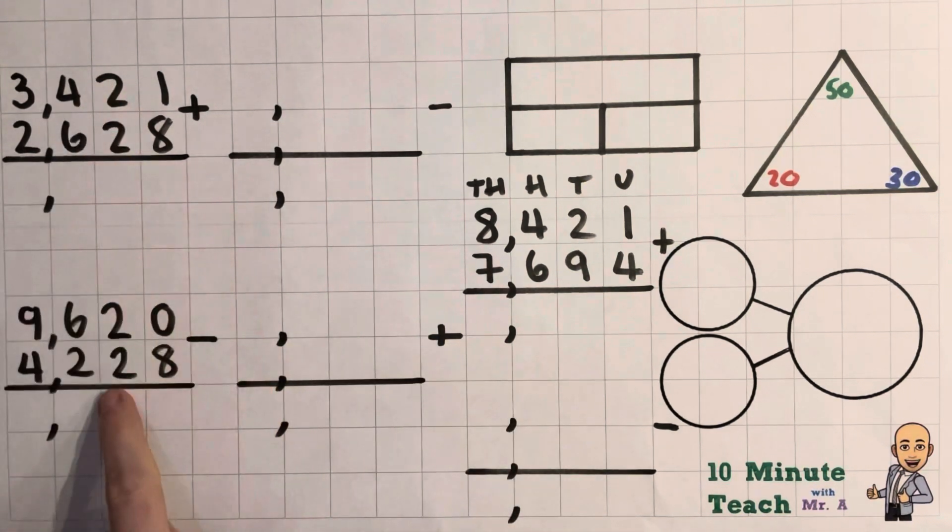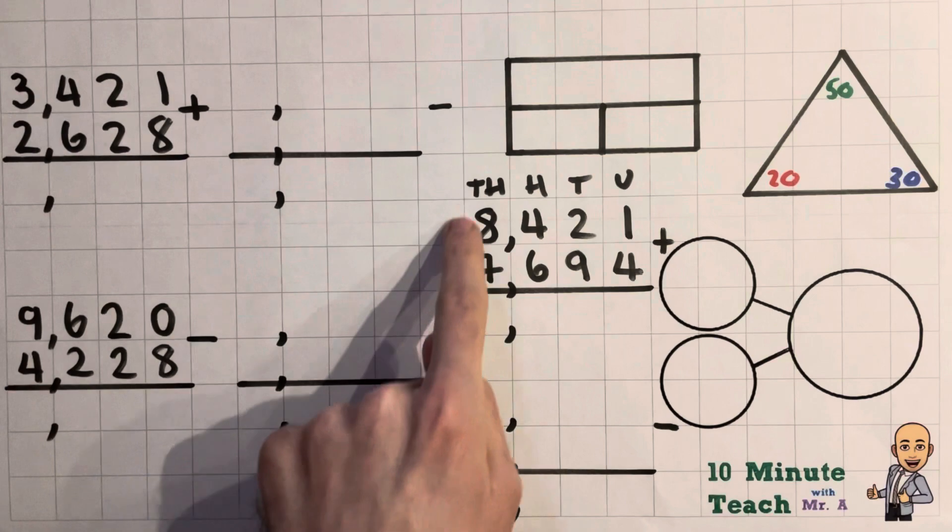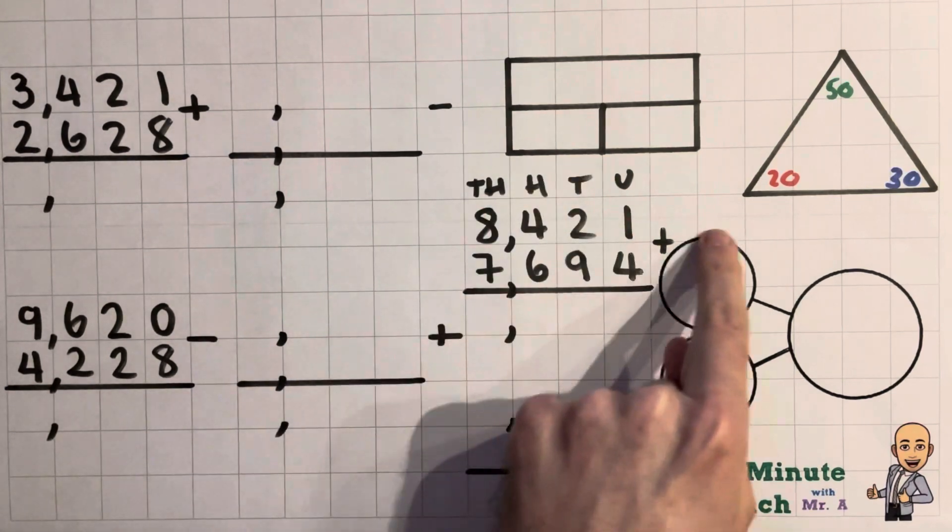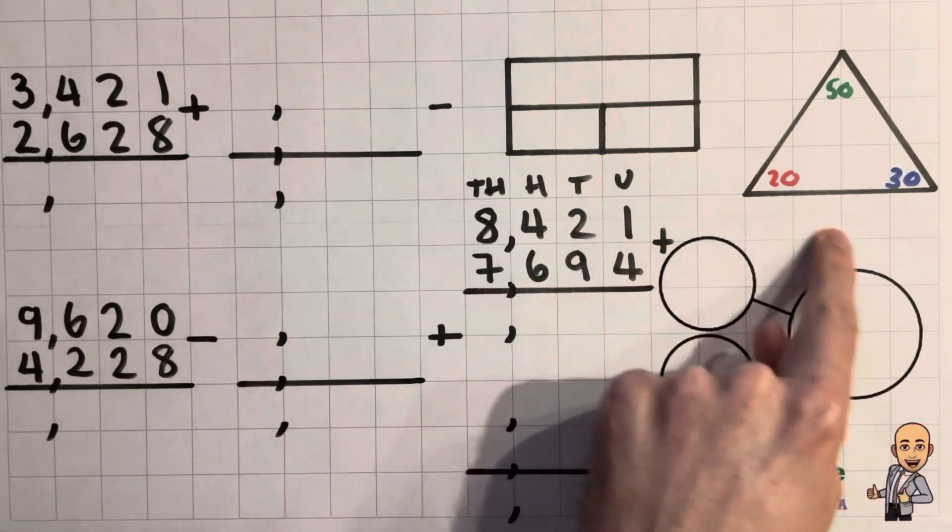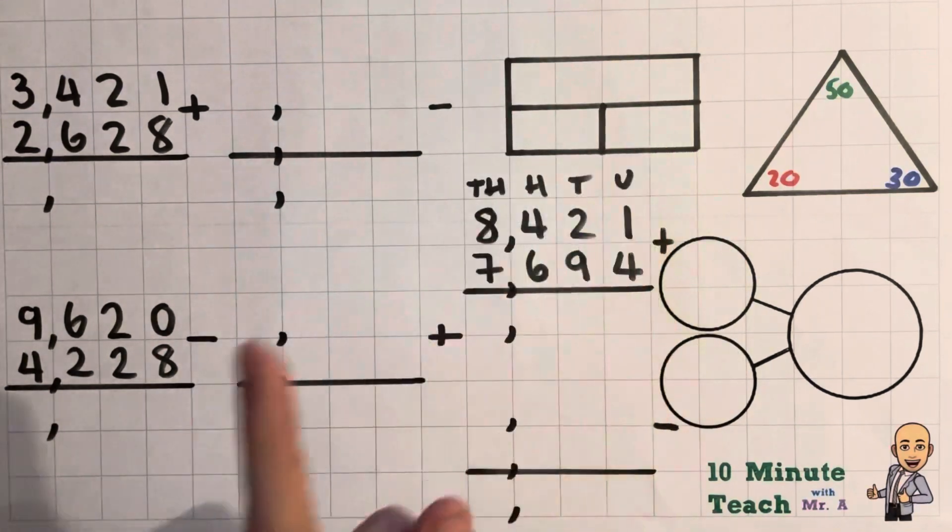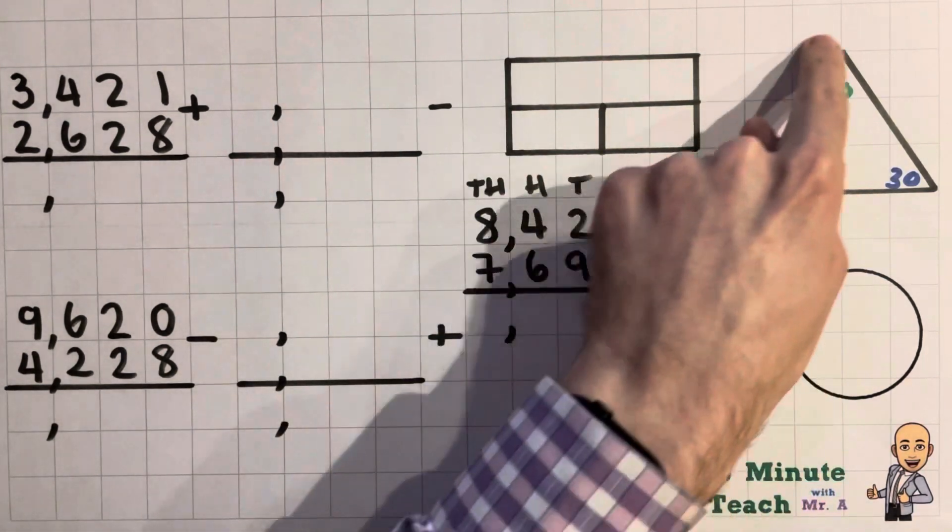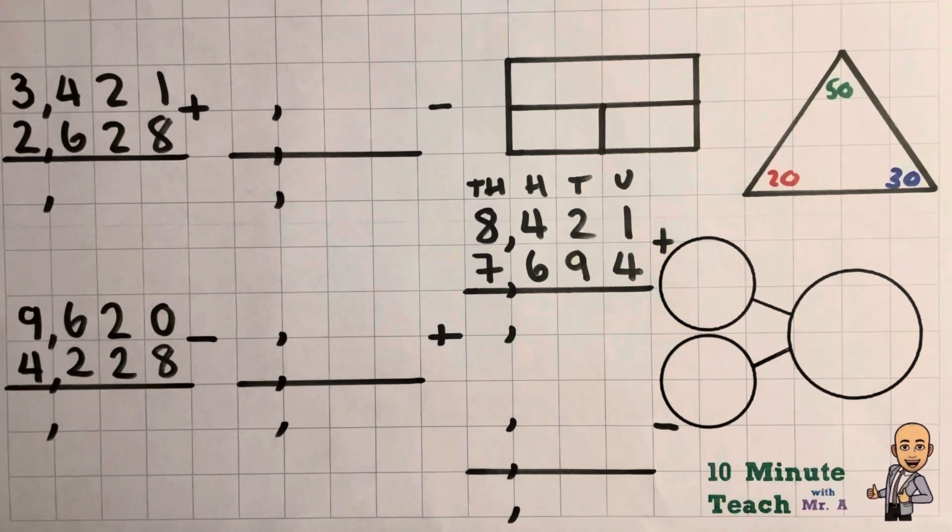So we've got a couple of examples to have a go at later on. We're going to start with this first example and as always we've got our part part whole model and the bar model to help us, but first off I just want to draw your attention to a little triangle over here.